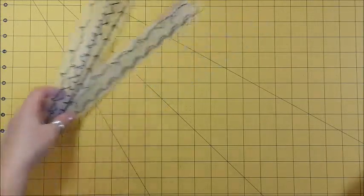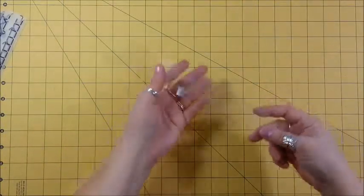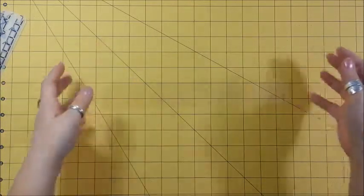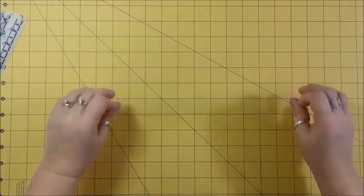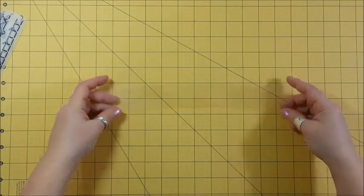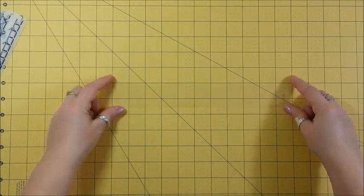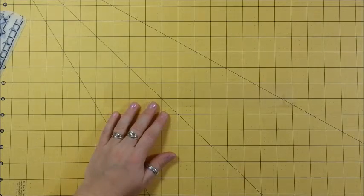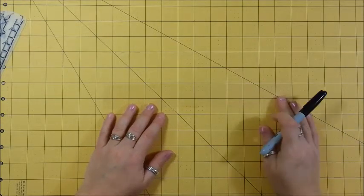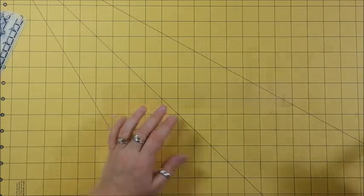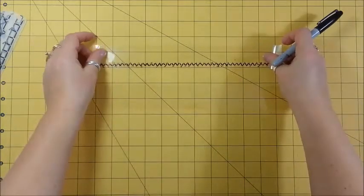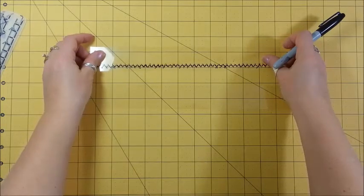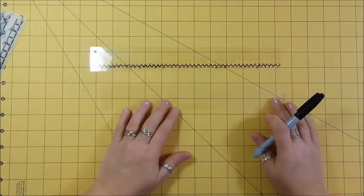So what I did was I took shrink wrap, like shrinky dinks, those sheets and I cut them into strips, one and a half inch strips. And then what I did was I measured every, the one that I ended up doing that I liked the most is this one. And it looks like I did it every quarter of an inch.